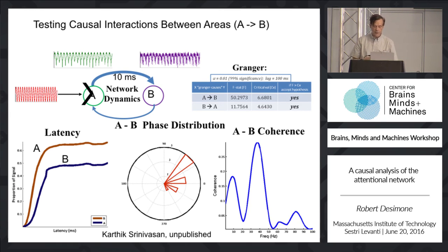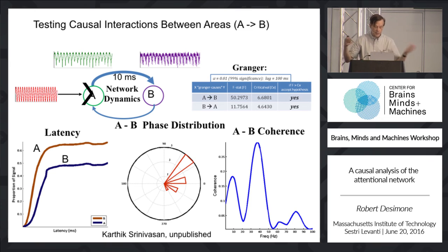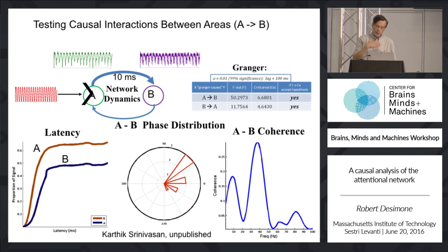What many people regard as the gold standard of testing causality is to actually perturb activity in one structure — either deactivate or activate cells in one structure — and then see their effect on another structure. I'll be talking about many of these different tools in this brief talk today. Most of the work that we've been doing has been on spatially directed attention, but in recent years we've developed a major interest in feature or object-based attention.